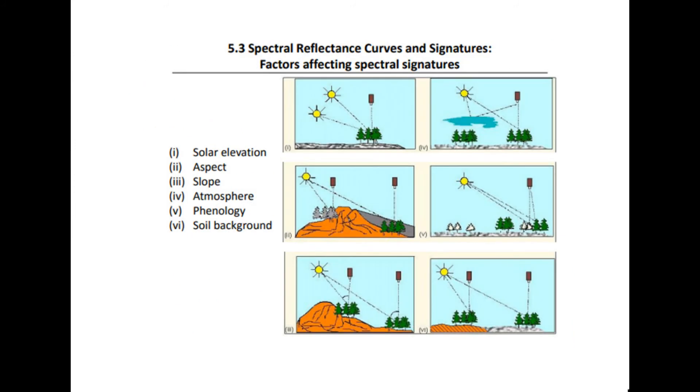Another thing we should go through is spectral reflectance curves and signatures. Spectral curves or signatures are the fingerprints of different targets that can be used to identify them in remotely sensed images. You want to know a fingerprint of a target, like a tree, just by looking at the fingerprint, the signature, the spectral curve of it. There are a few factors affecting spectral signatures, and this can be either the solar elevation, where the sun is in the sky, the aspect, which is kind of like the angle, the slope and different elevations. Then you have atmosphere, what's in the air at the time, the phenology of different tree species or different heights of trees, and soil background, whatever the object is on, will also affect the picture.